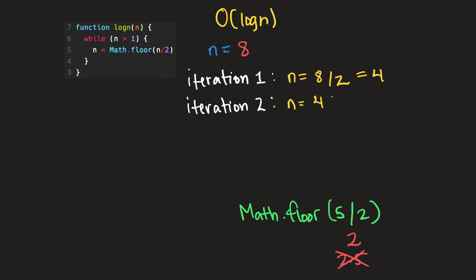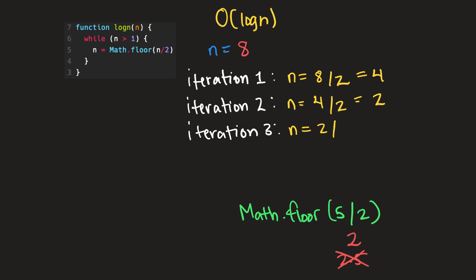So n is going to equal four divided by two, which is going to equal two. So now our n is equal to two. And while n is greater than one, we're going to do this again — two is greater than one, so we're going to do it again for a third iteration. So n is going to equal two divided by two, which is going to equal one. So at this point our n is equal to one, and we go back to the condition: while n is greater than one. But right now n is equal to one, it's no longer greater than one, so we're not going to continue with this while loop.